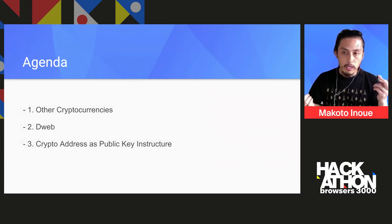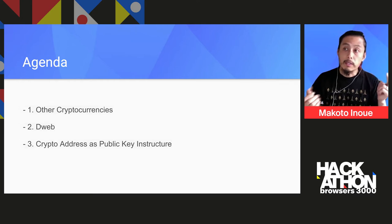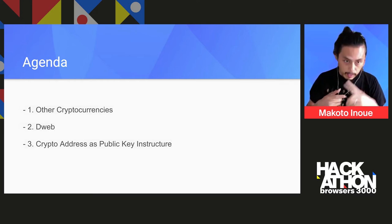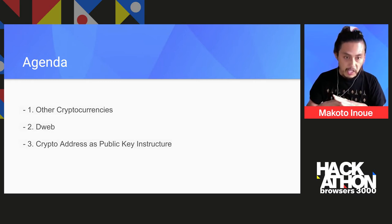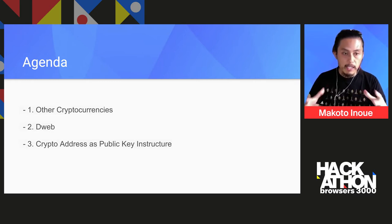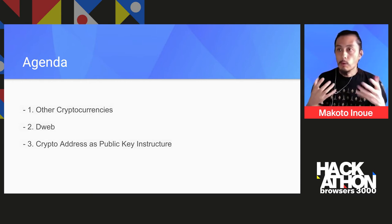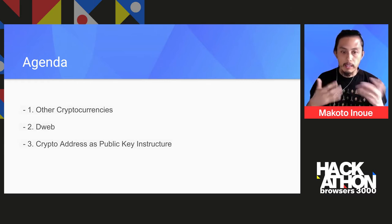In today's talk I want to introduce two different use cases of different record types. You can store and make use of other cryptocurrencies, and for web purposes. I also want to extend the idea of the Ethereum address — not just for a wallet, but more as a kind of public key infrastructure.